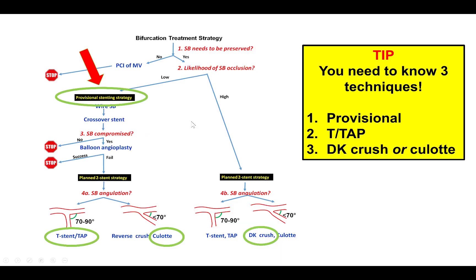So the plan has changed now. This is essentially a 010 bifurcation, and the provisional technique was selected.